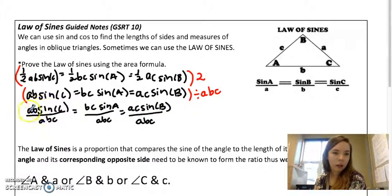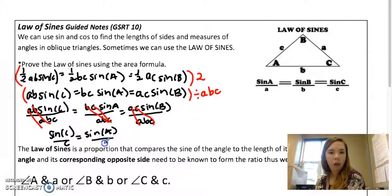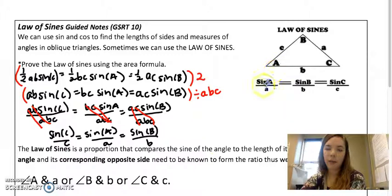In this case A and B cancel out, in this case B and C cancel out, in this case A and C cancel out. So then I have sine of C over C equals sine of A over A and sine of B over B, which is where this Law of Sines comes from.